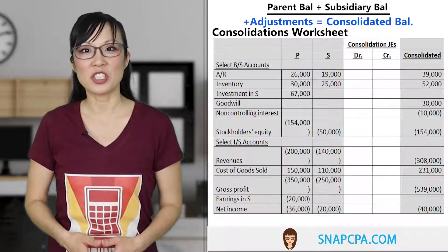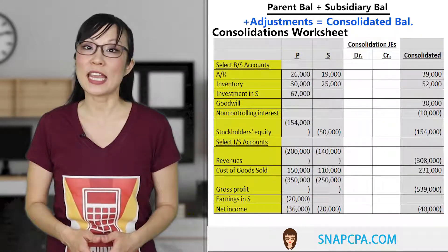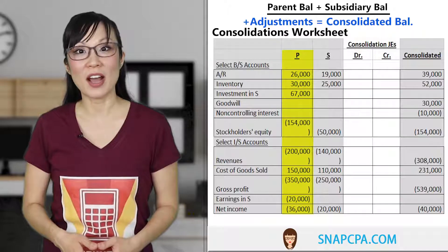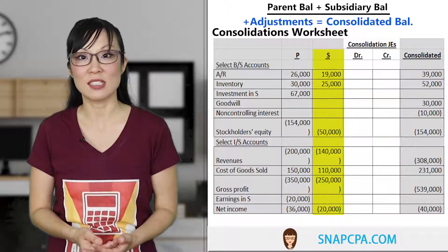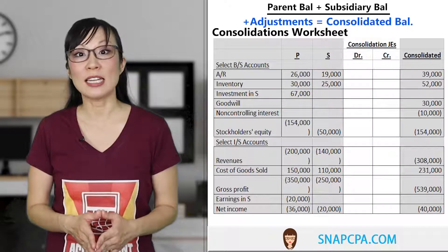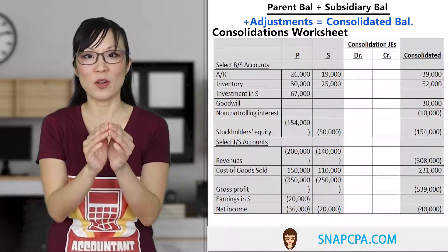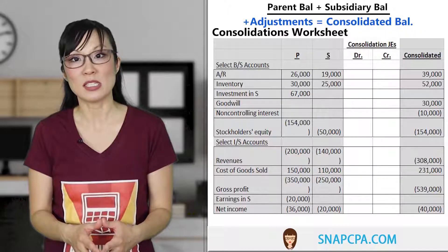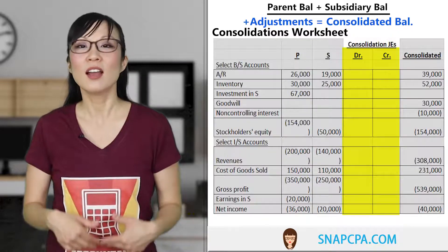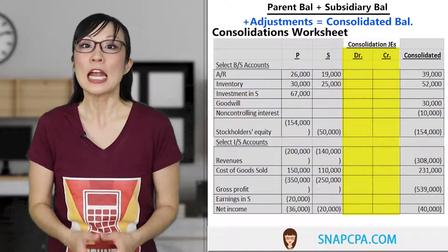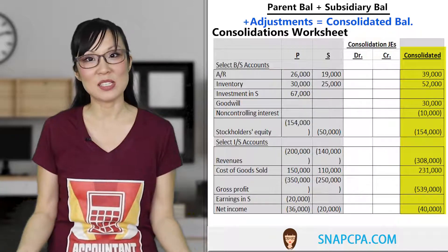The complexities come in when we have to make adjustments, and that brings us to how do we consolidate. Let's look at the sample consolidation worksheet. Here we're consolidating the parent with one sub. The first column gives the account names, the second has the parent's account balances, and the third has the subsidiary's account balances. Some accounts are simply added together, but others require adjustments entered into the Consolidated Journal Entries debit and credit columns. Then in the last column, we add up the balances for the parent, the sub, and any adjustments made.